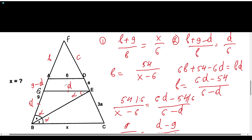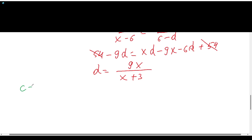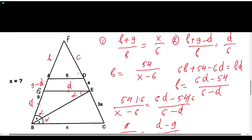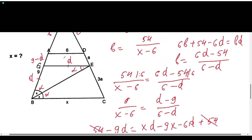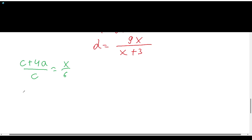Doing the same thing for the same triangles but with other sides, we can get d in terms of x again. For the big triangle bcf and the small triangle bdf, the ratio of the sides gives us: (c + 4a) over c equals x over 6, so 4a over c equals (x − 6) over 6.